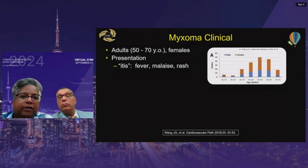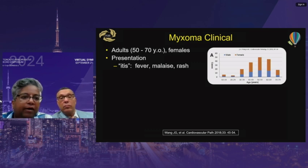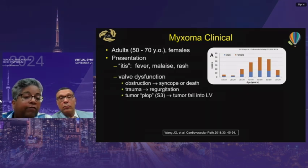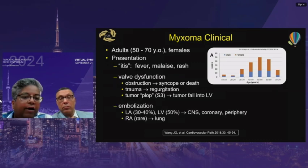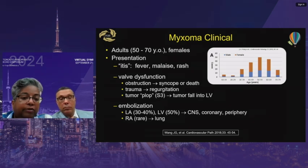Myxomas present mostly in adults aged 50 to 70 with a female predominance. Not all are symptomatic, but when they are, they can present with inflammatory responses such as fever, malaise, or rash. They can cause valvular dysfunction — obstruction leading to syncope or death, and some regurgitation. On auscultation, a specific S3 'tumor plop' sound may be heard. Most devastatingly, they can present with embolization from the left atrium or left ventricle to the brain, coronaries, or peripheral structures.